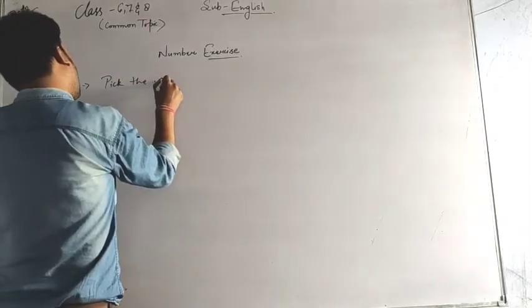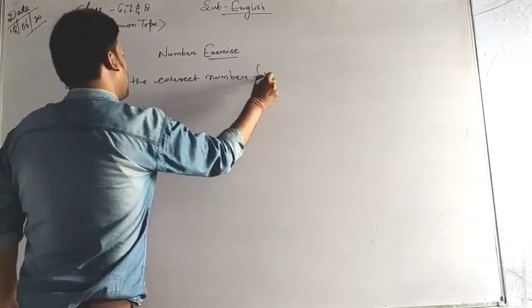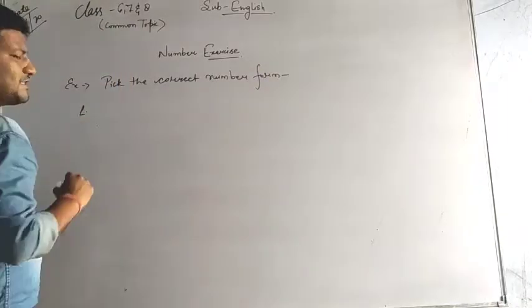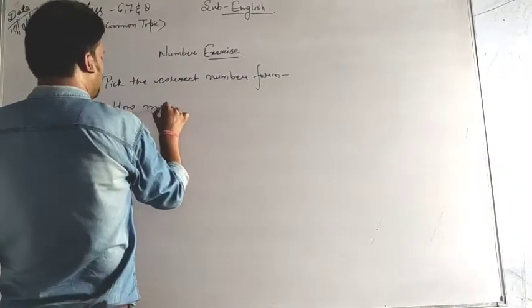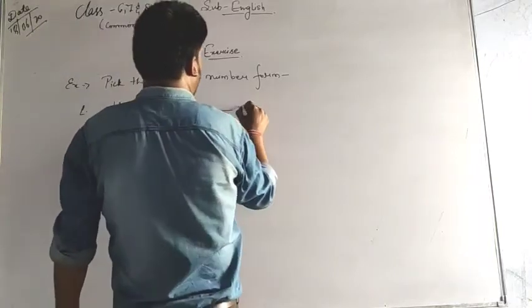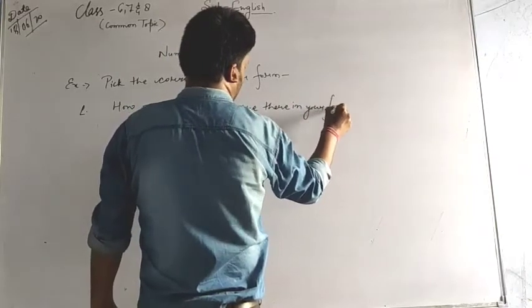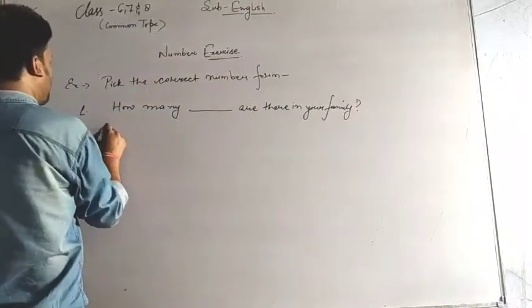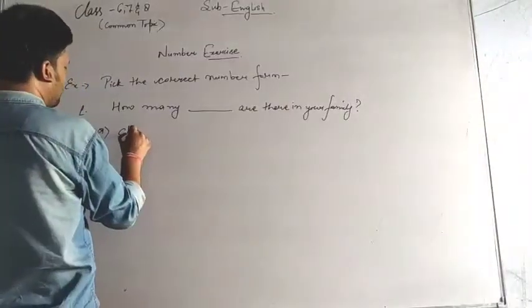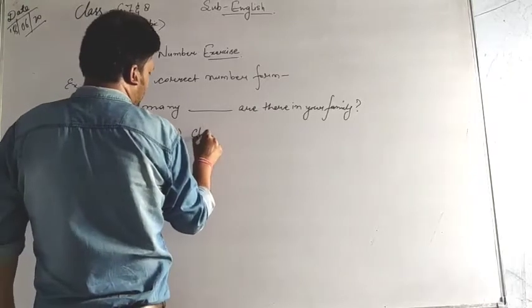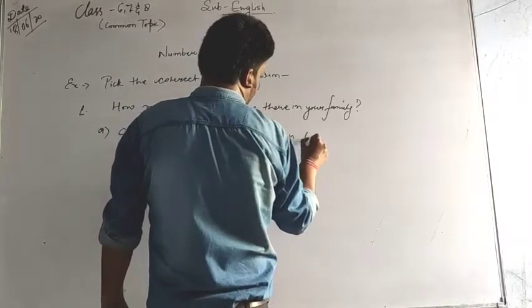First sentence for you is: how many dash are there in your family? Option A is child, option B is childs, option C is children, option D is children's.